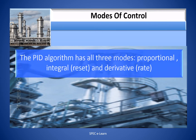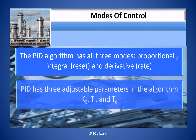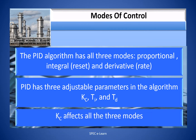The PID algorithm has all three modes: Proportional, Integral or Reset, and Derivative or Rate. PID has three adjustable parameters in the algorithm: Kc — the controller gain, Ti — the integral time, and Td — the derivative time.